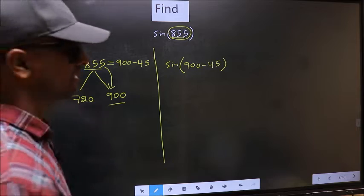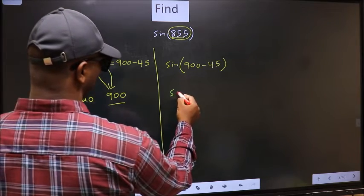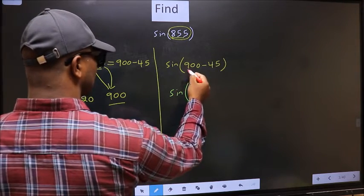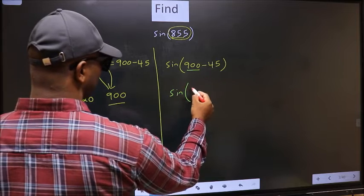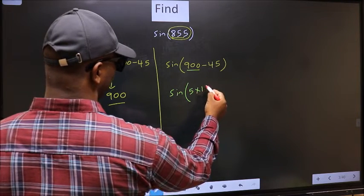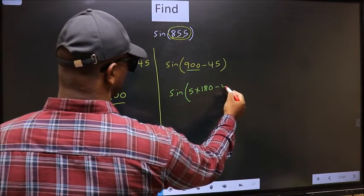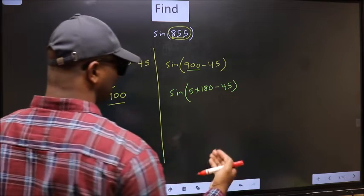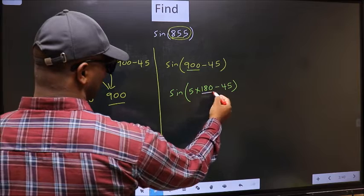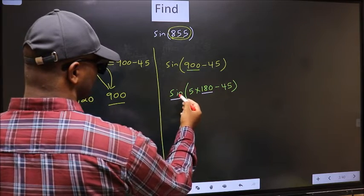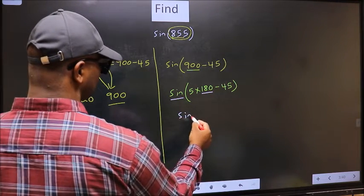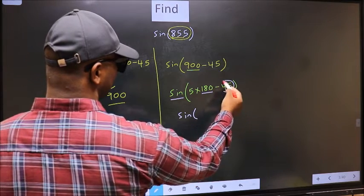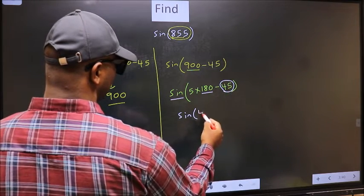Next, sin. In place of 900, now we write 5 times 180 minus 45. Next, here we have 180. So, sin is not going to change. It will remain sin, and inside we get the angle 45.